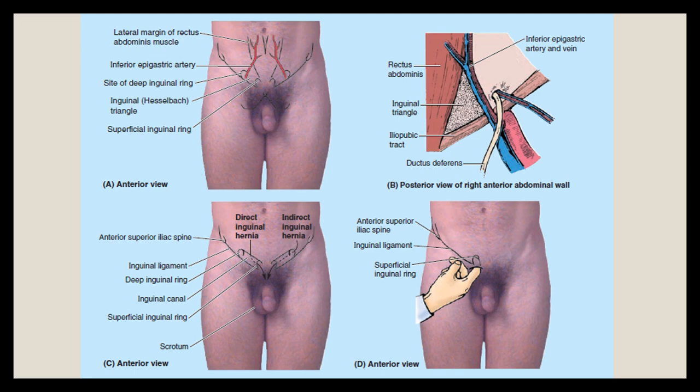Reviewing the palpation principles: the superficial inguinal ring is palpated superolaterally to the pubic tubercle, and the deep inguinal ring is also 2 to 4 cm superolateral to the pubic tubercle, over the inguinal ligament, situated around 1.5 cm above the mid-inguinal point. The inferior epigastric vessels are a key landmark: a hernia in the medial region, in the area of the Hesselbach's triangle, medial to those vessels, is a direct inguinal hernia.